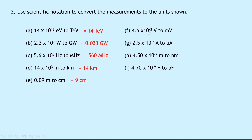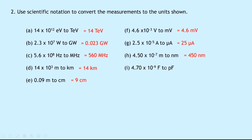Part F: 4.6 times 10 to the minus 3 volts to millivolts. Milli is times 10 to the minus 3, so this just becomes 4.6 millivolts. Part G: 2.5 times 10 to the minus 5 amps to microamps. Micro is times 10 to the minus 6, so I need to move the decimal point one place to the right and this becomes 25 microamps. In part H: 4.50 times 10 to the minus 7 meters to nanometers. Nano is times 10 to the minus 9, so if we move the decimal point two places to the right we get 450 nanometers. And lastly part I: 4.70 times 10 to the power of minus 9 farads to picofarads. Pico is times 10 to the minus 12, so this becomes 4700 picofarads.